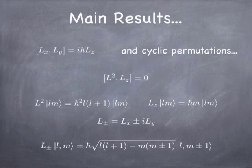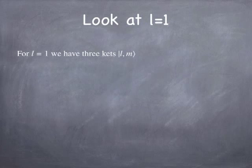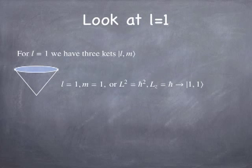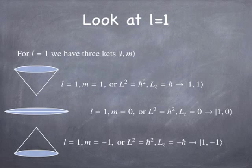I want to focus on the system when l equals one — orbital angular momentum of one. Then m can go from minus one to plus one in steps of one, so there are only three possible values. For l equals one, m can be plus one (the |1,1⟩ ket), m equals zero (the |1,0⟩ ket, corresponding to no z component of angular momentum), and m equals minus one (the |1,−1⟩ ket). These three states all have the same magnitude of angular momentum but different z components.